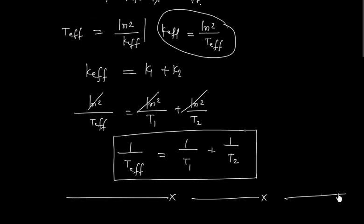In this lecture, we discussed parallel reactions. We found the concentration of A, B, and C at any time T. We also showed that the ratio of concentration of B to concentration of C remains constant at any time. Finally, we calculated the effective half-life, which satisfies 1/T1 plus 1/T2 equals 1/T_effective.